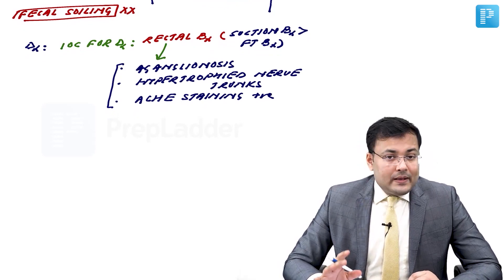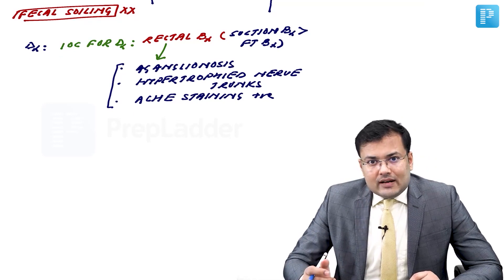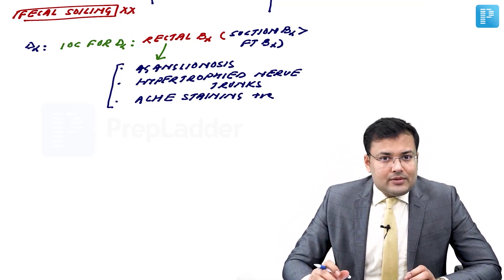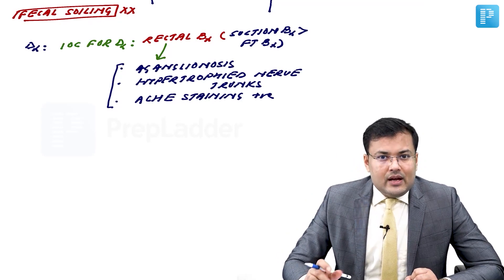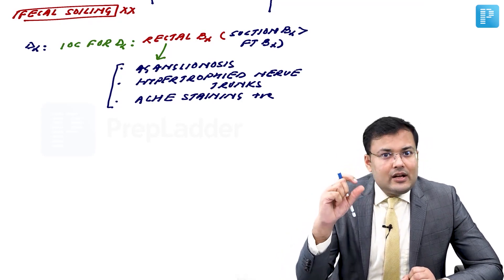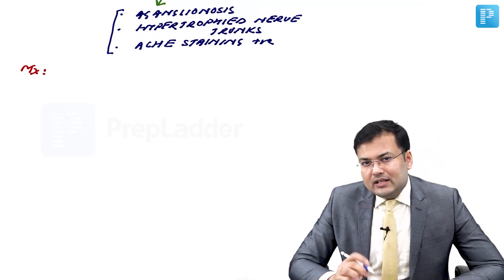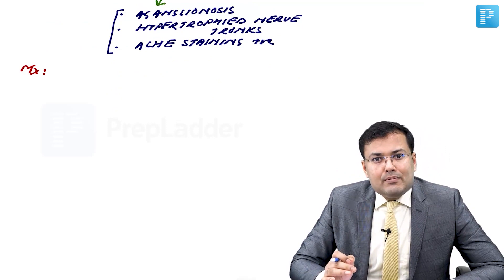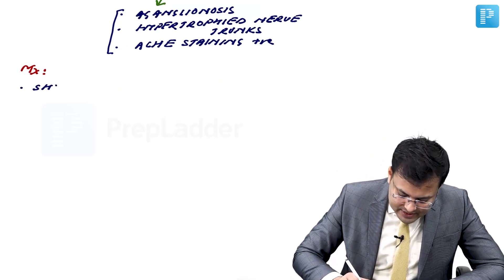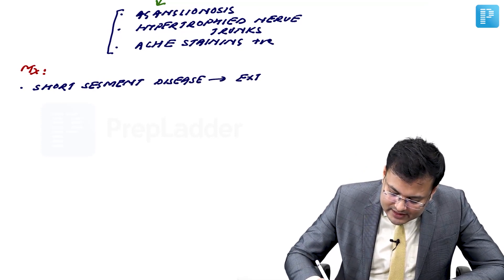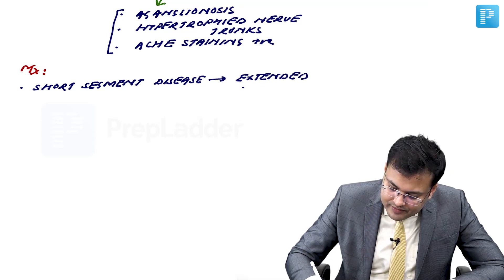Patients symptomatic just after birth have signs and symptoms of obstruction due to longer segment involvement, so surgery is required. For short segment disease, we go for extended myectomy.